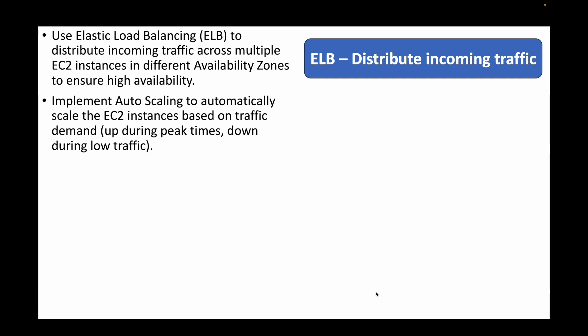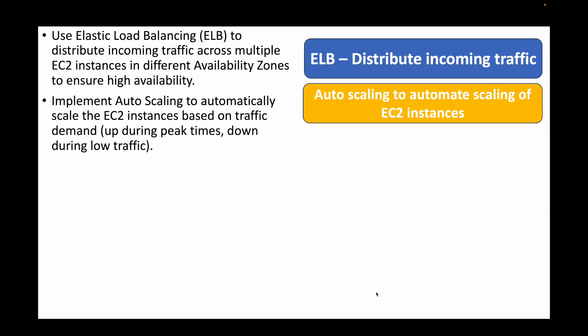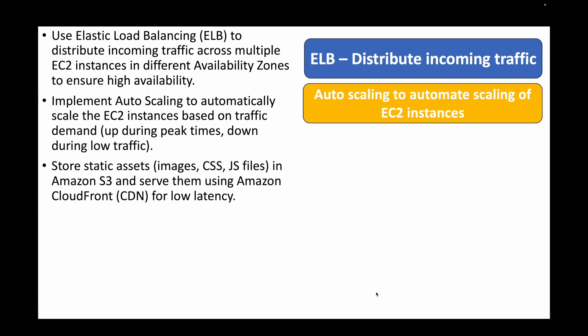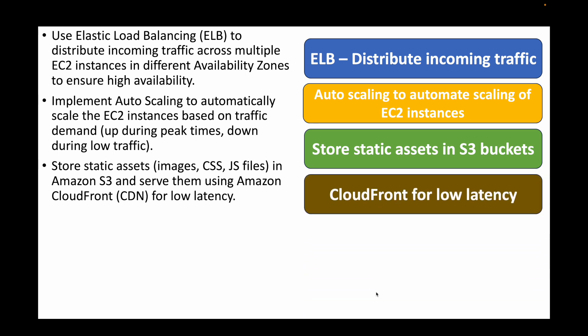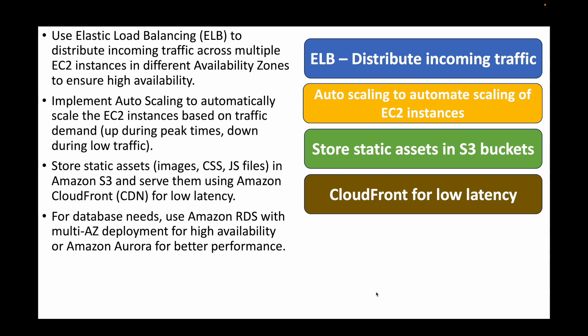We can implement Auto Scaling to handle scalability — it will automatically scale EC2 instances based on traffic demand, launching more instances when traffic is high and terminating them when traffic is low. We can store static assets like images, CSS files in S3 buckets, and then leverage CloudFront as a content delivery network to cache data for low latency.